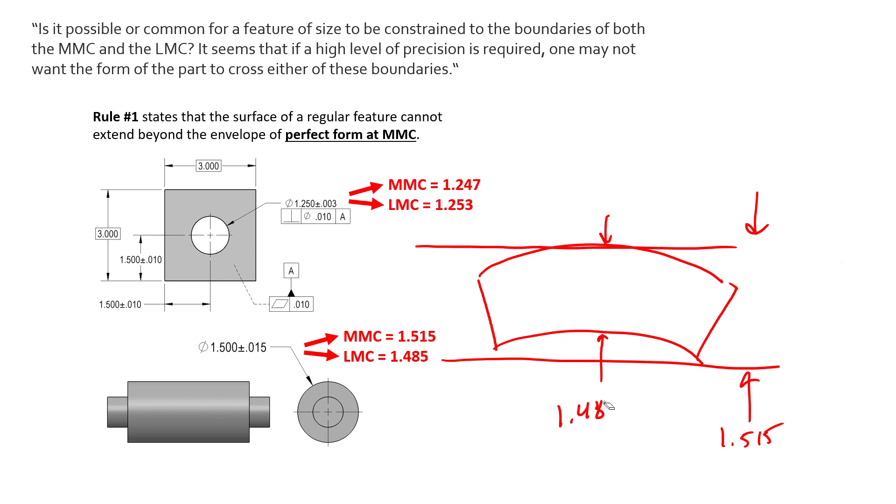1.485, it can't be any smaller than that anywhere on this part, otherwise it's going to fail just the size check, the local size checks. So if that's the case, we could have a maximum of 30 thousandths form error here.